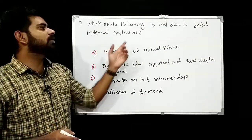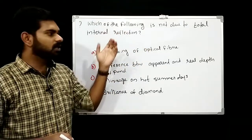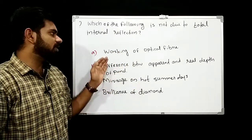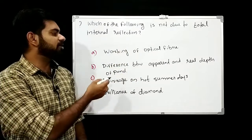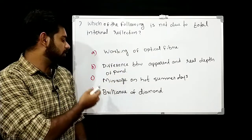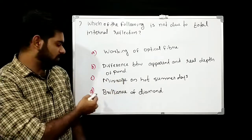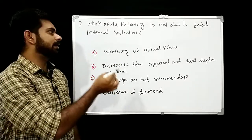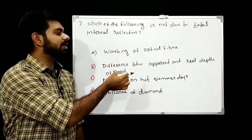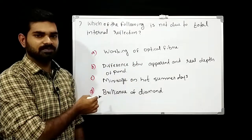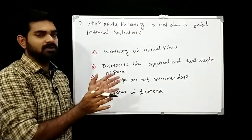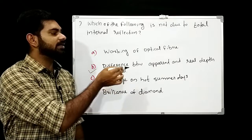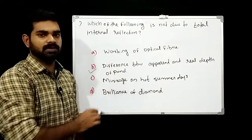Which of the following is NOT due to total internal reflection? Option A: working of optical fiber, option B: difference between apparent and real depth of pond, option C: mirage on hot summer days, option D: brilliance of diamond. The answer is option B — the difference between apparent and real depth of a pond is due to refraction, not total internal reflection.